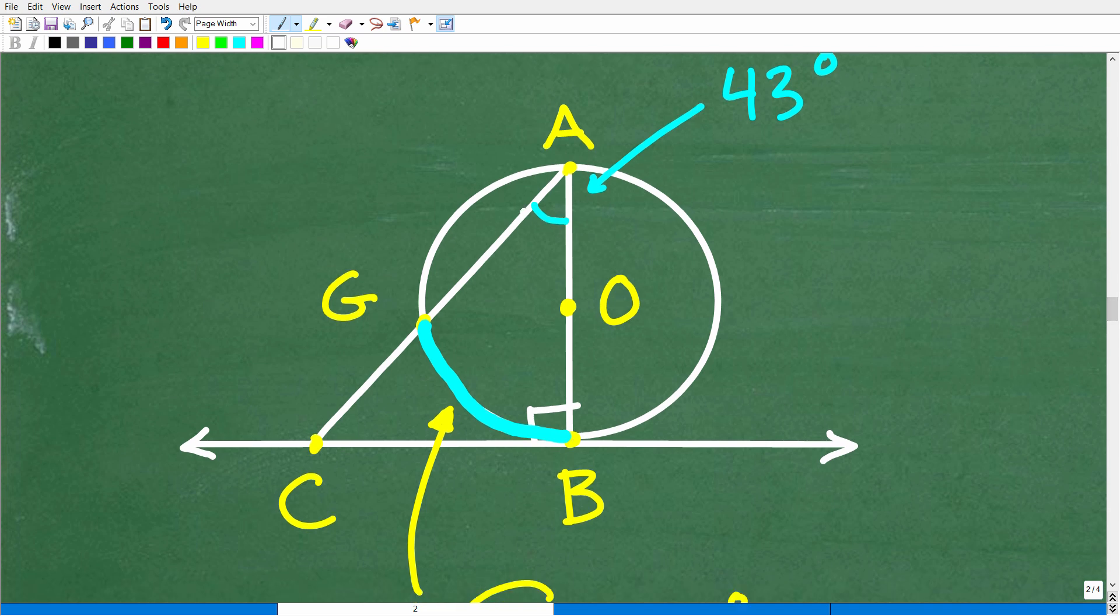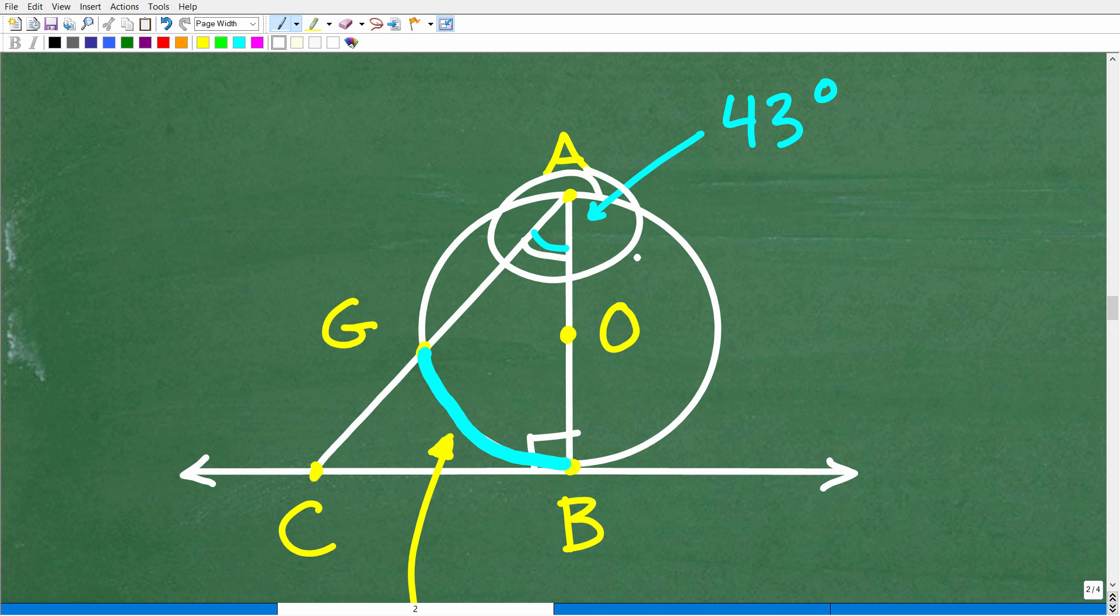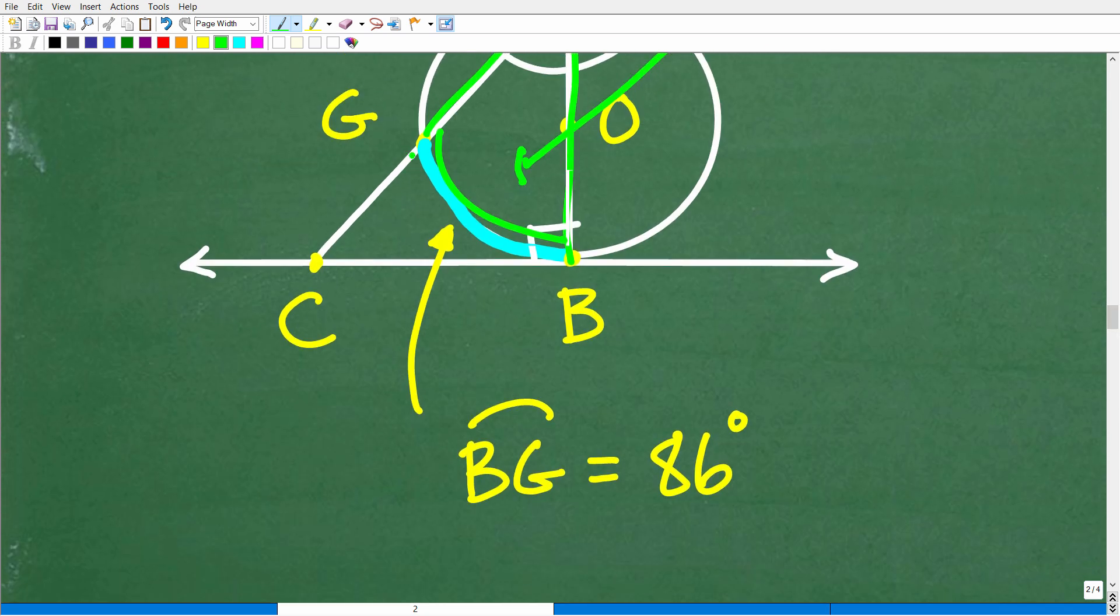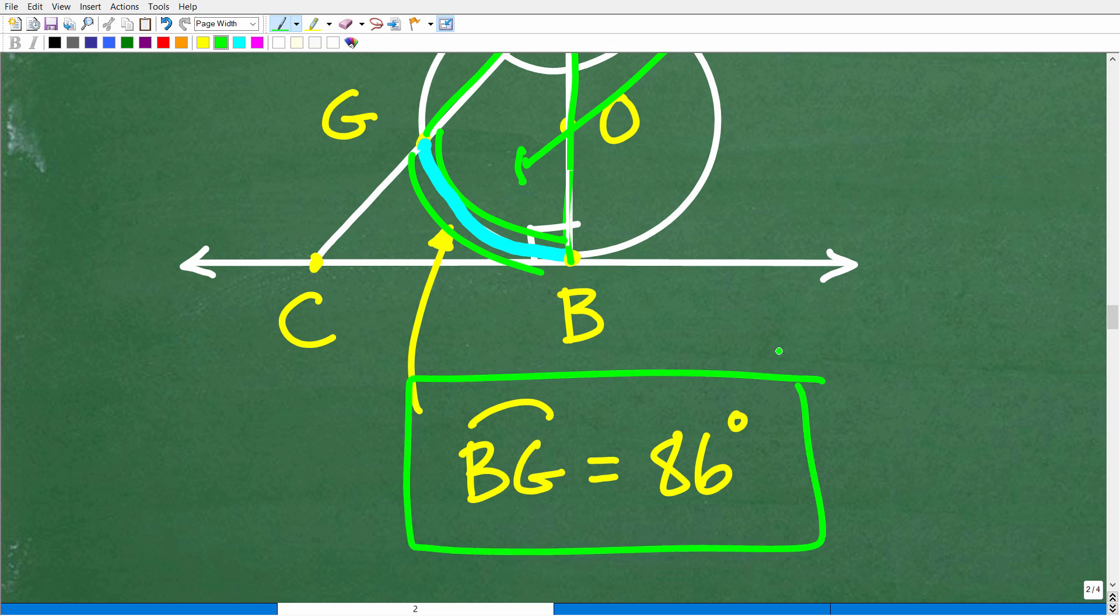We did all this work to figure out that this angle of the triangle is 43 degrees. But really, we're talking about this inscribed angle here. So 43 degrees is one half of the arc. That means that the arc is double 43 degrees, which is 43 times 2, which of course is 86 degrees. So the measure of arc BG would be 86 degrees.